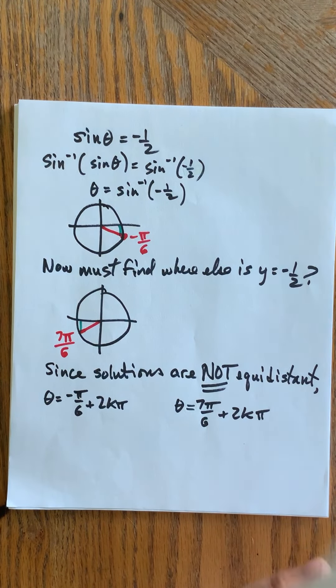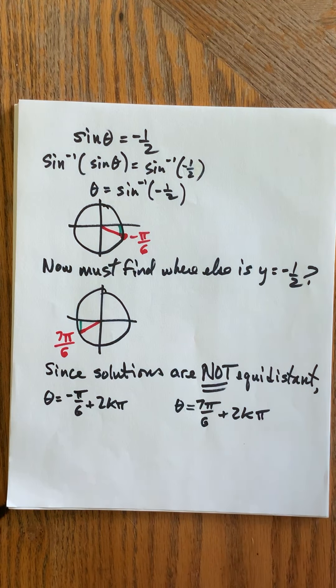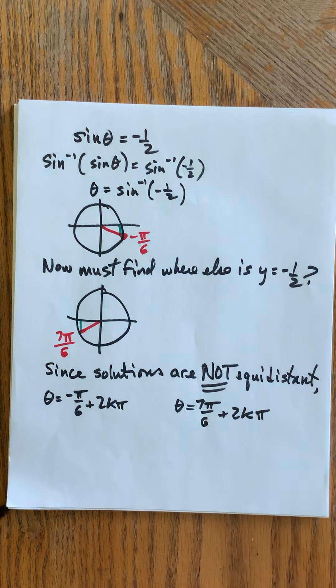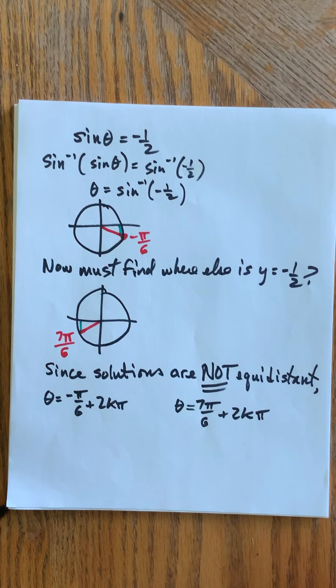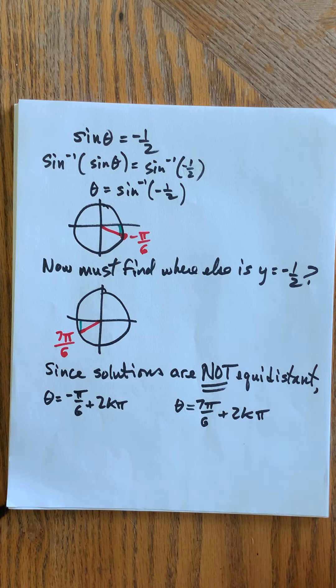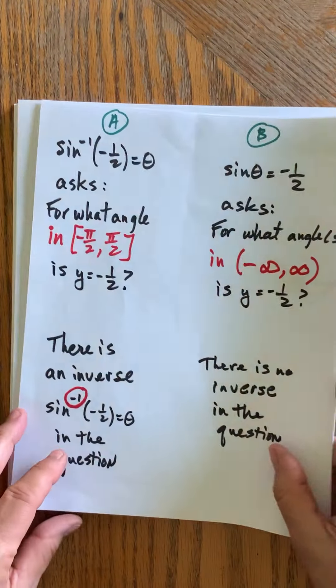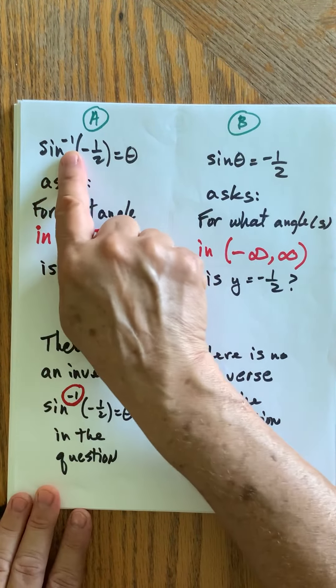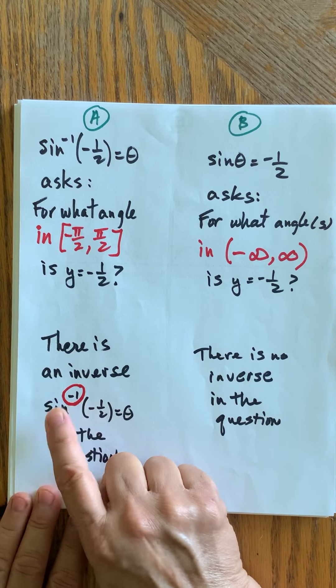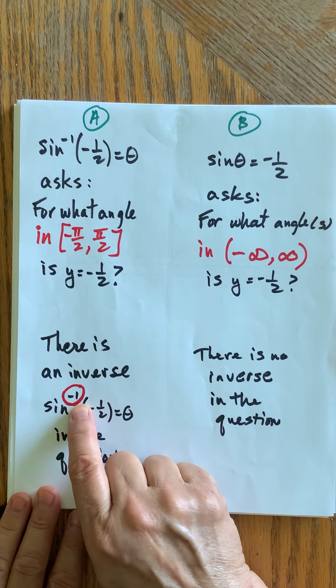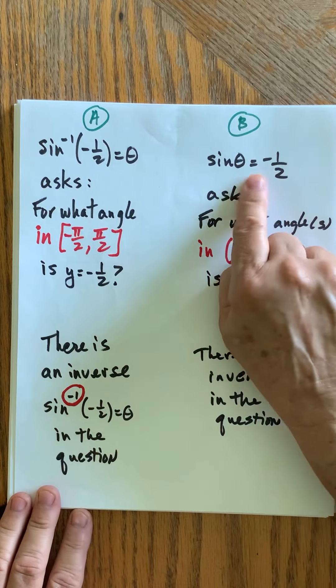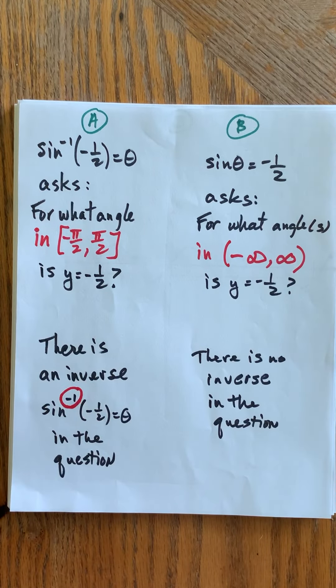Let's just recap that. The way you tell the difference is that in one question you'll actually see the inverse symbol, the little negative one right after the trig function, and in this one you won't. Thanks so much for listening.